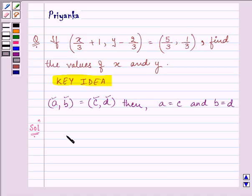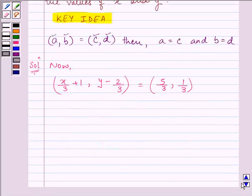Now, here we are given (x/3 + 1, y - 2/3) is equal to (5/3, 1/3). Right.